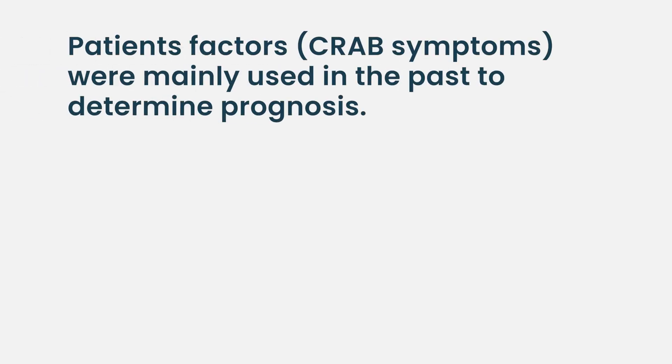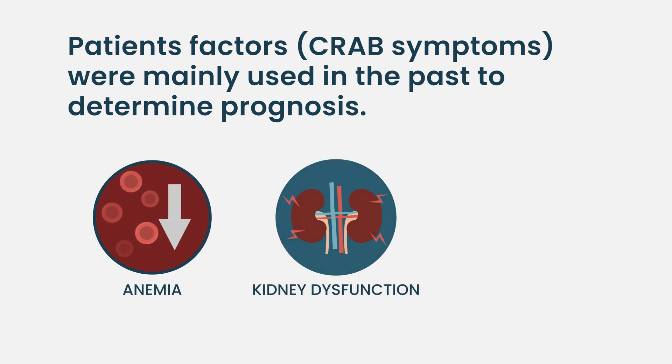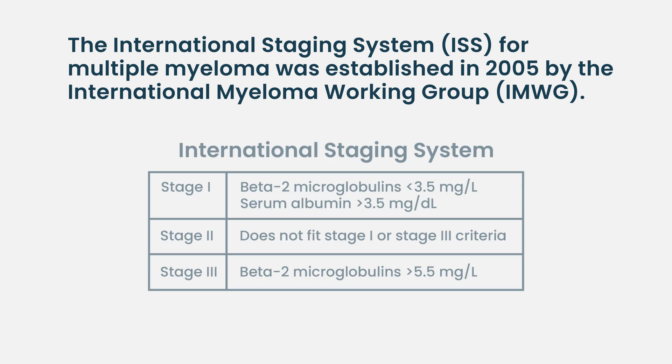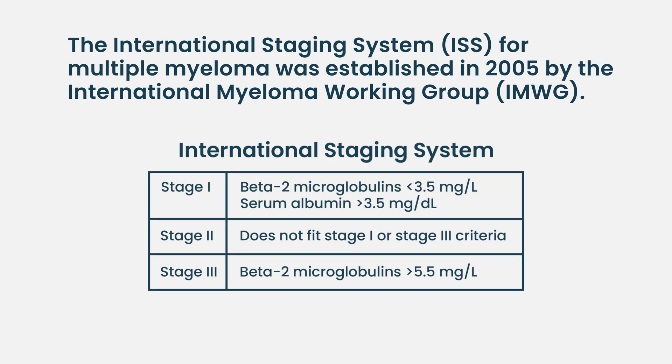If they were more beat up, if they had more severe anemia, if they had more severe kidney dysfunction, if they had terrible skeletal disease, those things imparted prognosis then. And then we recognized other things — the Mayo group was very fundamental in this. We recognized that disease characteristics, cell biology characteristics, markers that reflected increased cell turnover and aggressiveness, could predict tumor growth.